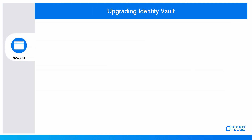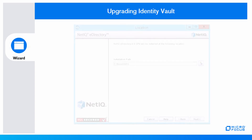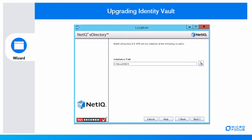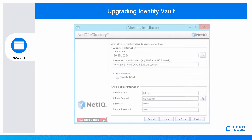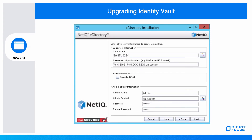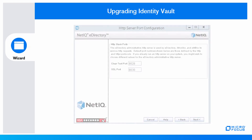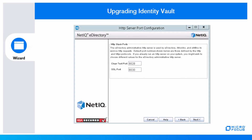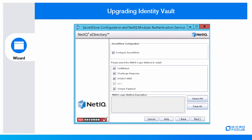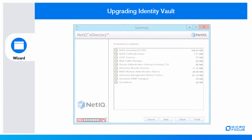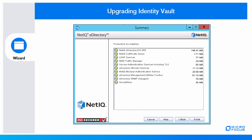Using the wizard, which is supported only on Windows platform: specify the path where you want to install Identity Vault, select the desired Identity Vault installation type, enter the tree name and administration information, enter HTTP server port details and LDAP configuration, check the configure secret store checkbox, then review the summary page and click Finish.